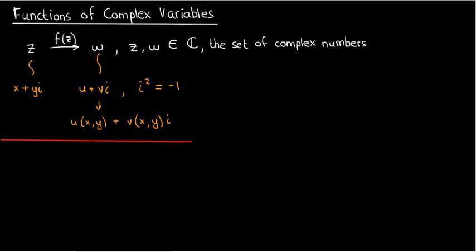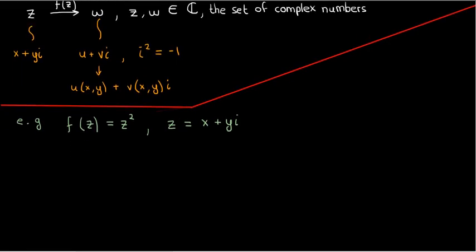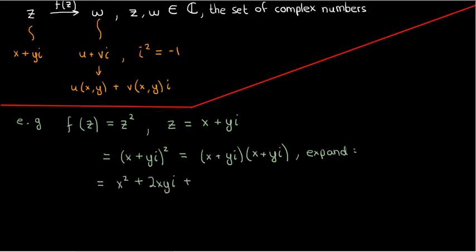Let's try to make sense of this with an example. Suppose that my complex function is just z squared. I can plug in my z, which is x plus yi, to rewrite this function as x plus yi whole square, which is x plus yi times x plus yi. I can expand this out to get x squared plus 2xyi plus yi whole square, and then use the fact that i squared equals negative 1 to write this expression as x squared minus y squared plus 2xyi.